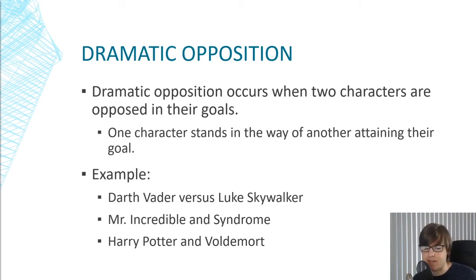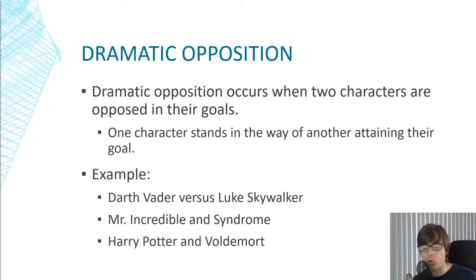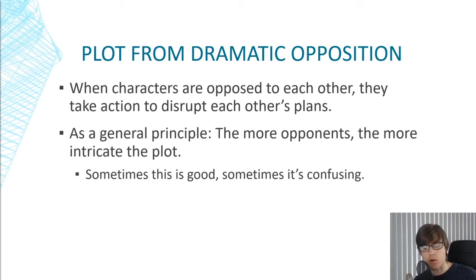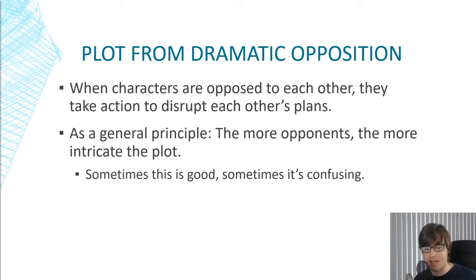This is the protagonist and antagonist relationship — the hero and the villain. So it's Darth Vader versus Luke Skywalker, Mr. Incredible versus Syndrome in The Incredibles, Harry Potter versus Voldemort. Each of these characters has fundamentally different visions of what they want to happen in the story world. We can create plots from dramatic opposition: when characters are opposed, they each take action to disrupt each other's plan. Luke Skywalker is trying to stop the Death Star and rescue the princess, while Darth Vader is trying to stop Luke from interfering in his plans.